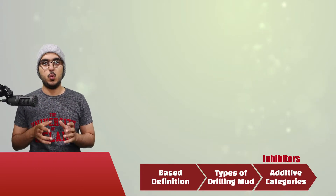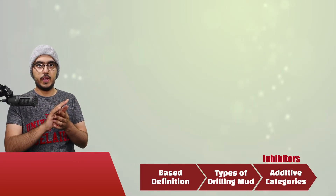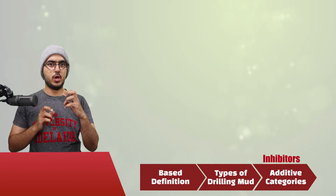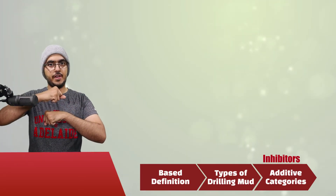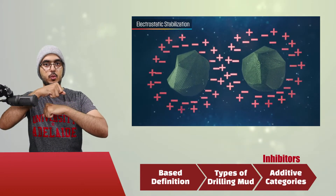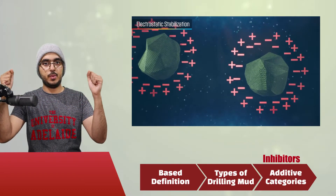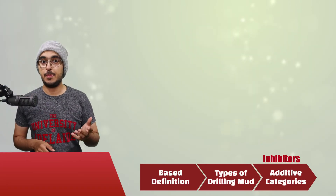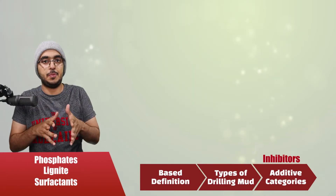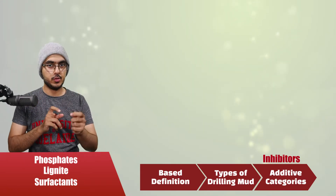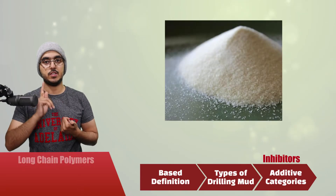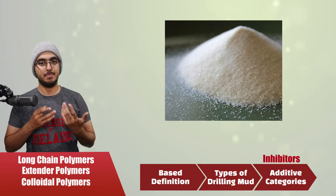Another chemical additive is mud thinners, where the liquid passes through the clay and neutralizes any positively charged faces or edges. So if you have a negative-faced clay and a positive-faced clay attached to each other because of opposite charges, the mud thinners will detach these two, causing lower viscosity. Examples for mud thinners include phosphates, lignite, and surfactants — or they can be polymers such as long-chain polymers, extender polymers, and colloidal polymers.